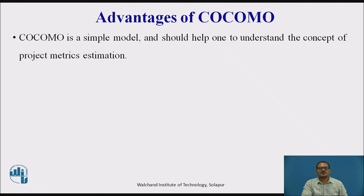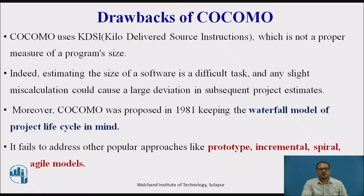The advantage of the COCOMO model is that it is simple and helps one understand the concept of project metric estimation. However, there are drawbacks. COCOMO uses lines of code as the size measure, which is not a proper measure of program size — estimating software size is a difficult task, and any slight miscalculation can cause large deviations in project estimates. Moreover, COCOMO was proposed in 1981 with the waterfall model in mind and fails to address popular approaches like prototyping, incremental, spiral, and agile models.